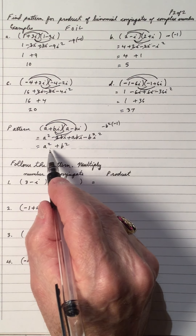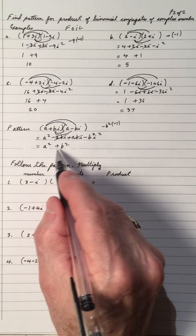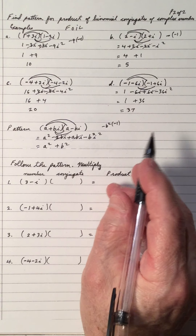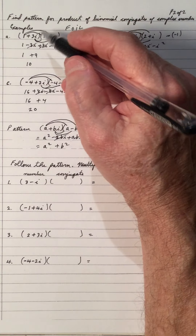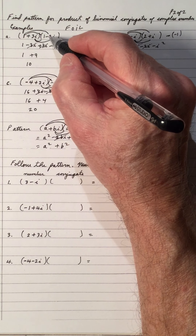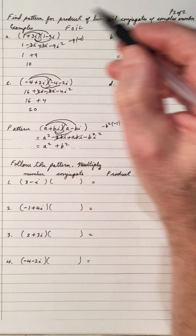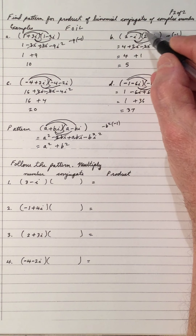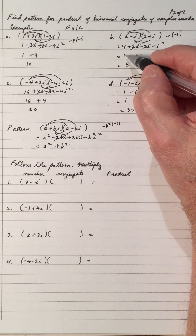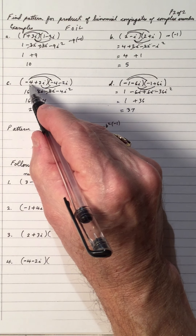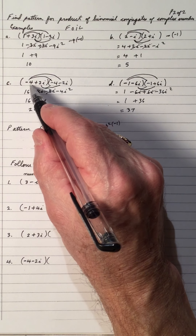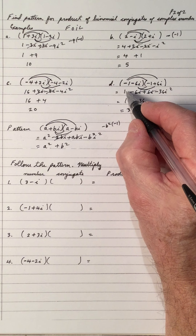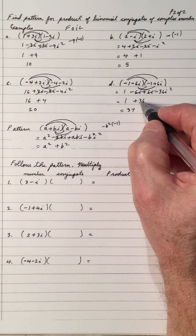The pattern is: when you multiply complex binomial conjugates, the result is a squared plus b squared. Verifying: for 1 plus 3i, a is 1 and b is 3, so 1 squared plus 3 squared equals 1 plus 9 equals 10. For 2 minus i, a is 2 and b is negative 1, so 4 plus 1 equals 5. For negative 4 plus 2i, negative 4 squared is 16 and 2 squared is 4, giving 20. And negative 1 squared plus negative 6 squared is 1 plus 36, which gives 37.